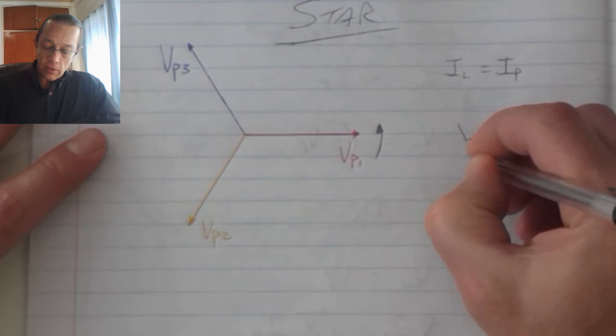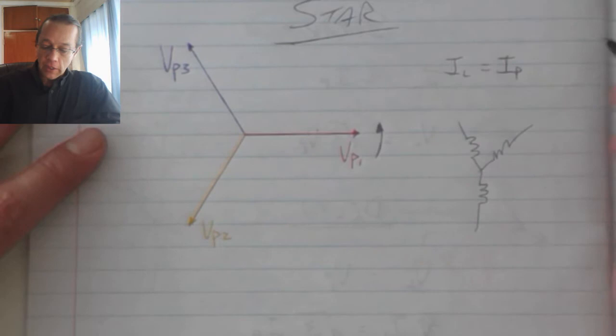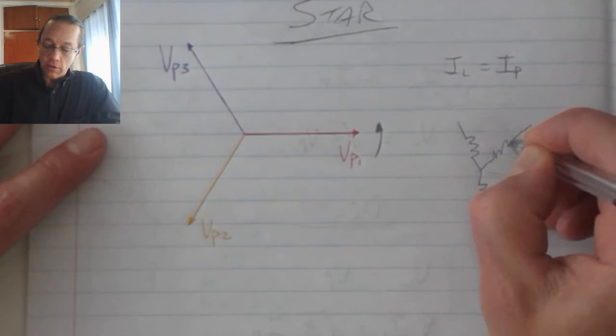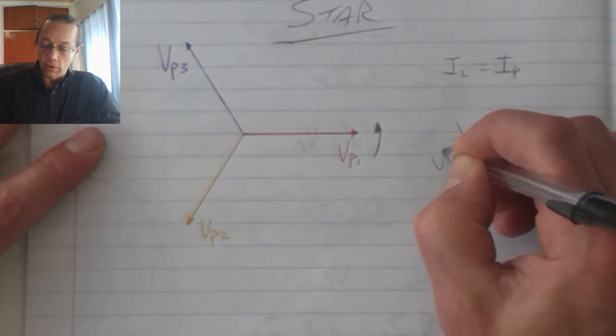But now when we connect, if we think back, our three coils are like that. So these three voltages are the voltages that we are measuring across my three coils or three conductors.